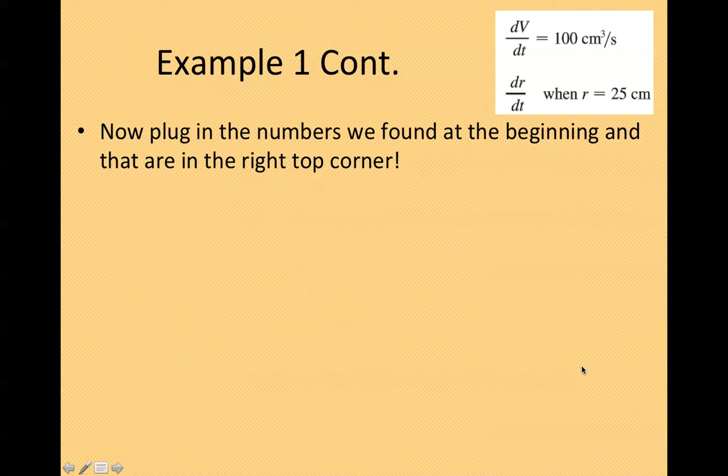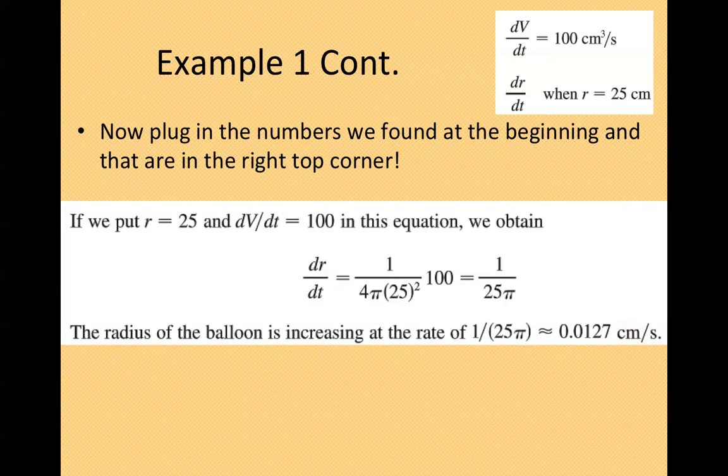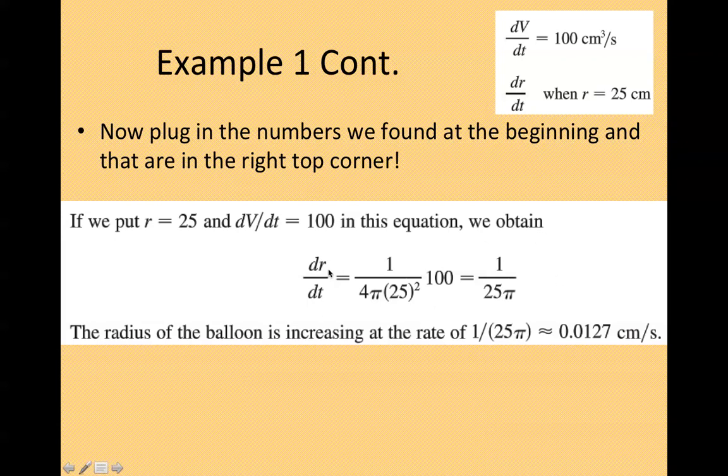Now, we solve for the unknown and we're left with dr/dt equals 1 over 4π R² dV/dt. Now plug in the numbers we found at the beginning and that are in the right top corner. So if we put in r equals 25 and dV/dt equals 100 into the equation, we obtain the following. Therefore, the radius of the balloon is increasing at a rate of 1 divided by 25π or 0.0127 cm per second.